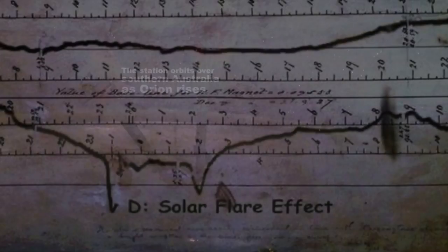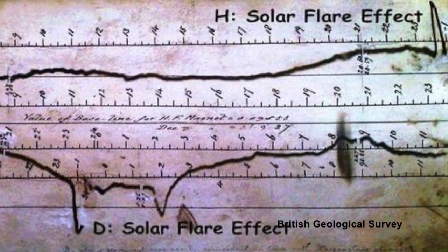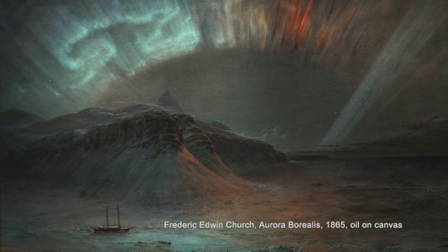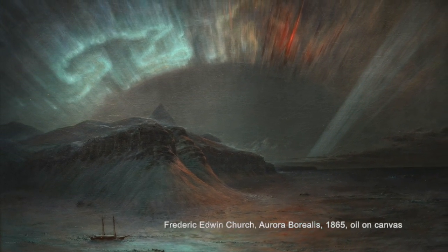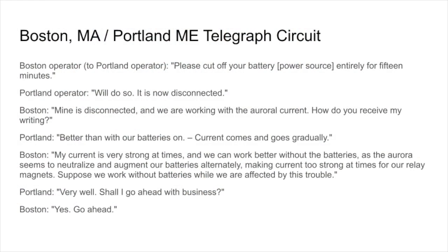A very strong geomagnetic storm on the 1st and 2nd of September 1859 created auroral lights that were seen even near the equator. Telegraph lines received and carried so much energy that some operators got electric shocks, pylons threw sparks, and some circuits were able to run entirely from auroral current, disconnected from normal power. Some stations even reported fires.